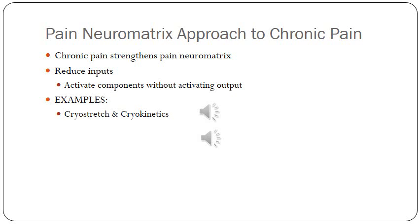The pain neuromatrix and approach for chronic pain: when the brain thinks the body is in danger, you experience pain, and the purpose of that pain is to produce some type of action. The problem is when that input strengthens, pain can be produced with less input, even through non-nociceptive mechanisms — making it easier and easier for the person to experience pain. You want to break that cycle by reducing inputs and limiting the body's ability to experience pain.